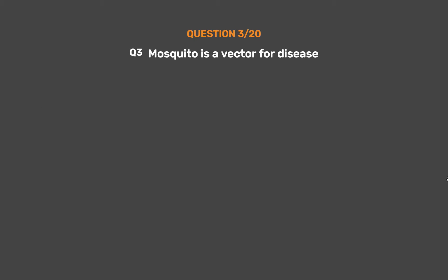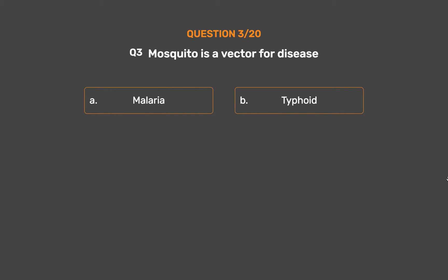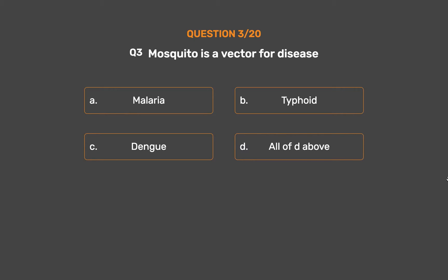Question number 3. Mosquito is a vector for which disease? Option A: Malaria. Option B: Typhoid. Option C: Dengue. Option D: All of the above.